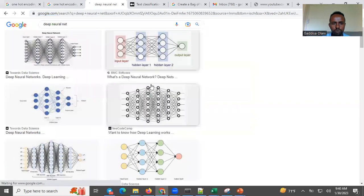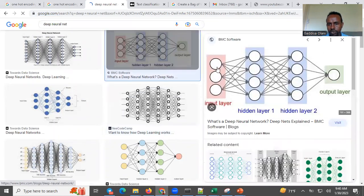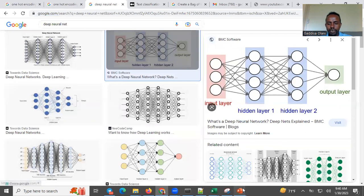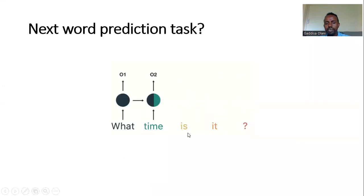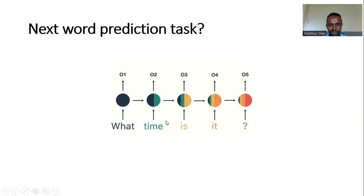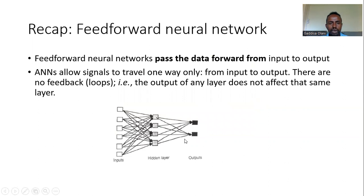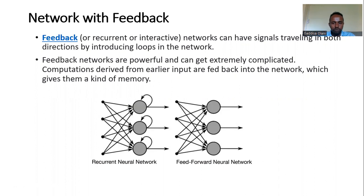The input and output can vary. If you have video as input, the input layer processes sequential data. This can be machine translation or video transcription. A typical feedforward neural network passes data from one layer to another linearly, without any loop. That is different from a recurrent neural network.